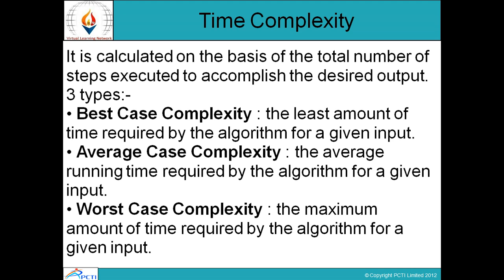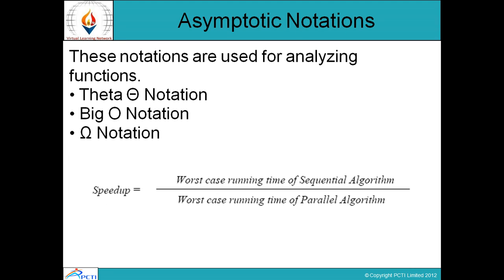We can specify time complexity with three types. First is best case complexity: the least amount of time required by the algorithm for the given input. Second is worst case complexity: the maximum amount of time required by the algorithm. Now, asymptotic notations — we can analyze our parallel algorithm using these: theta notation, big O notation, and omega notation.